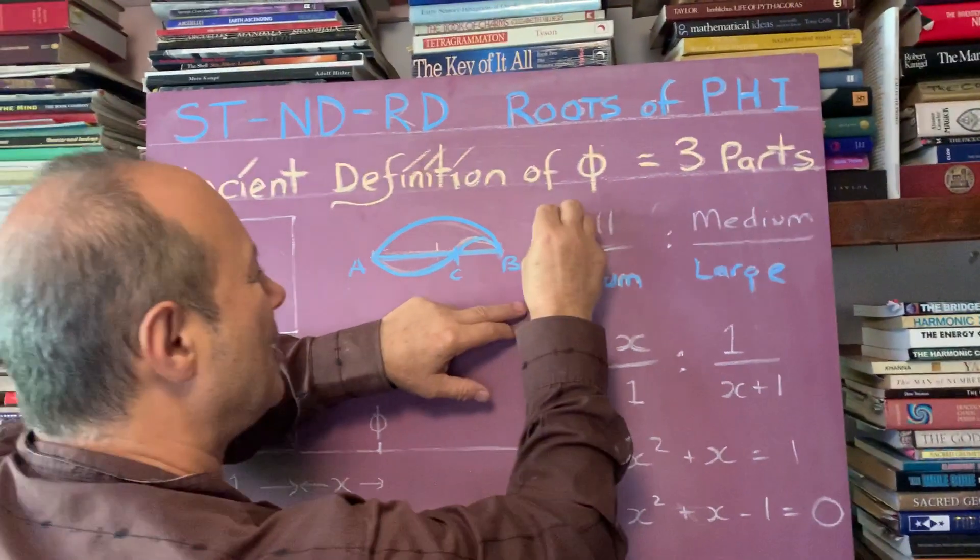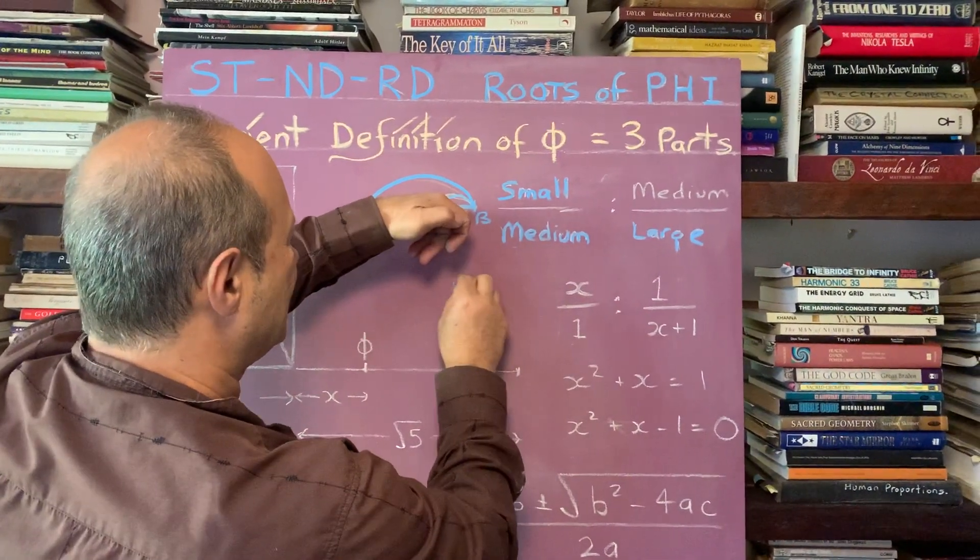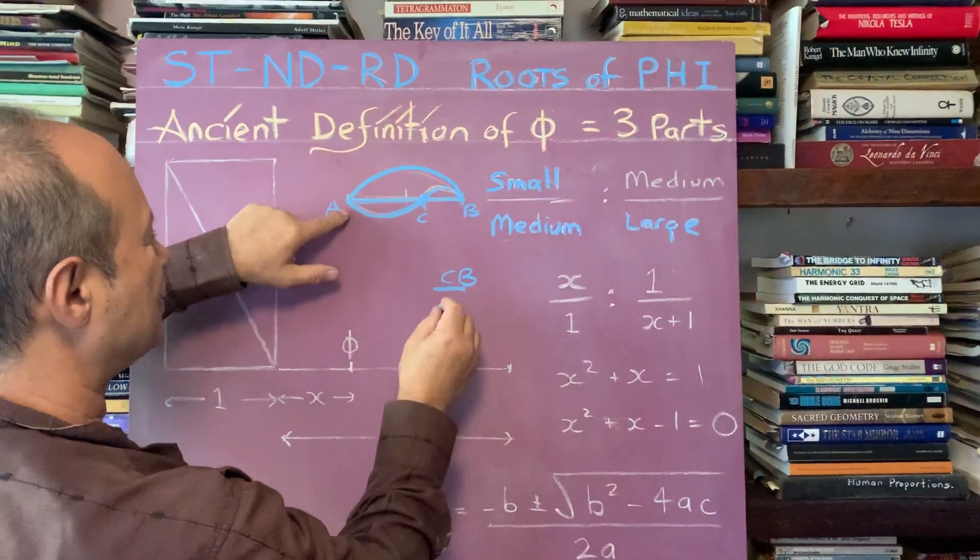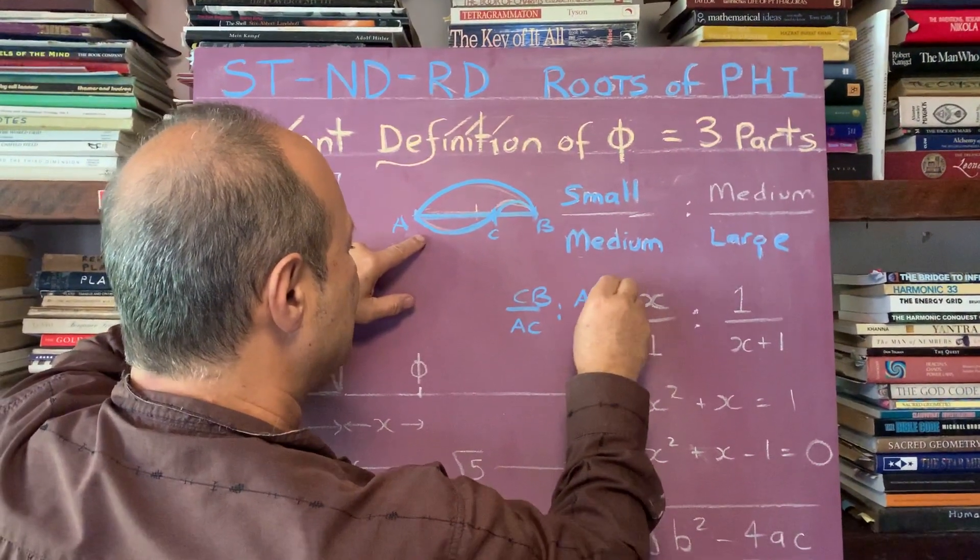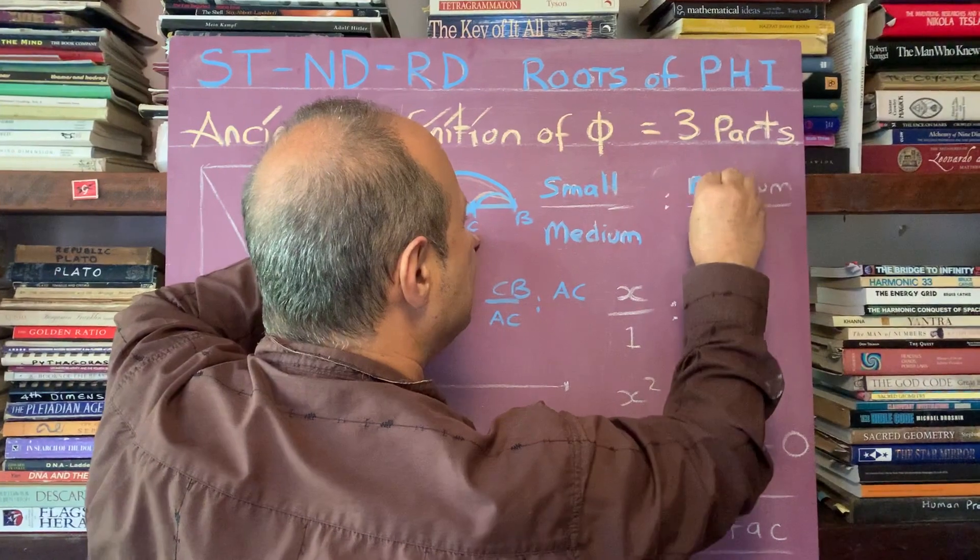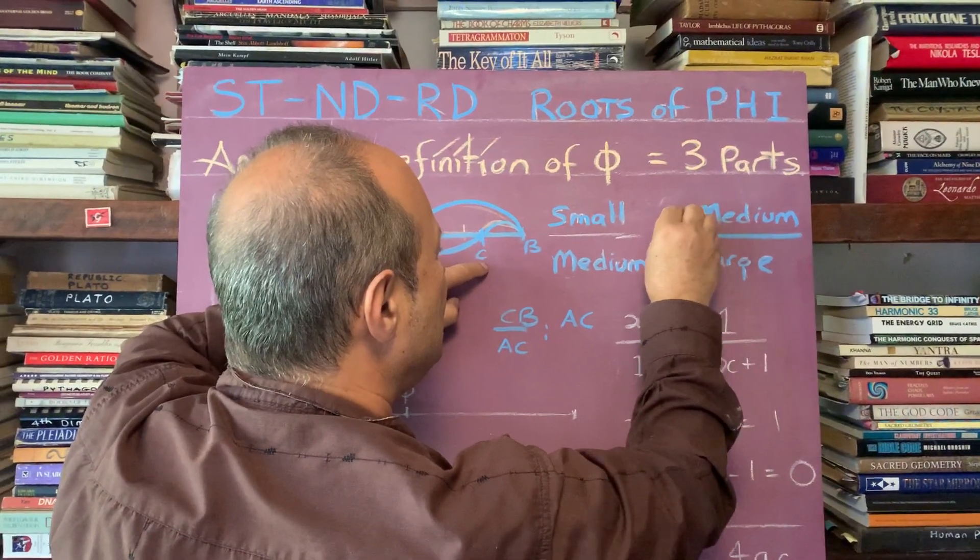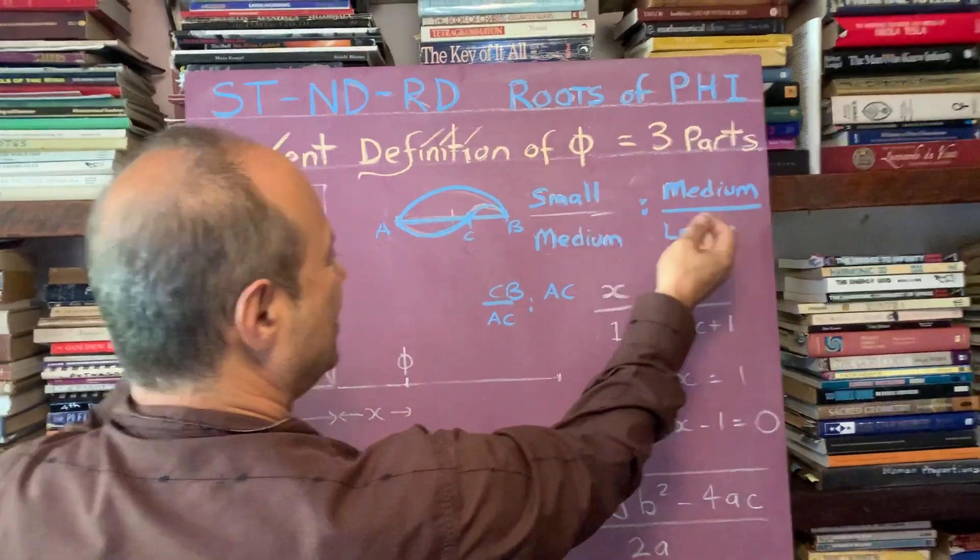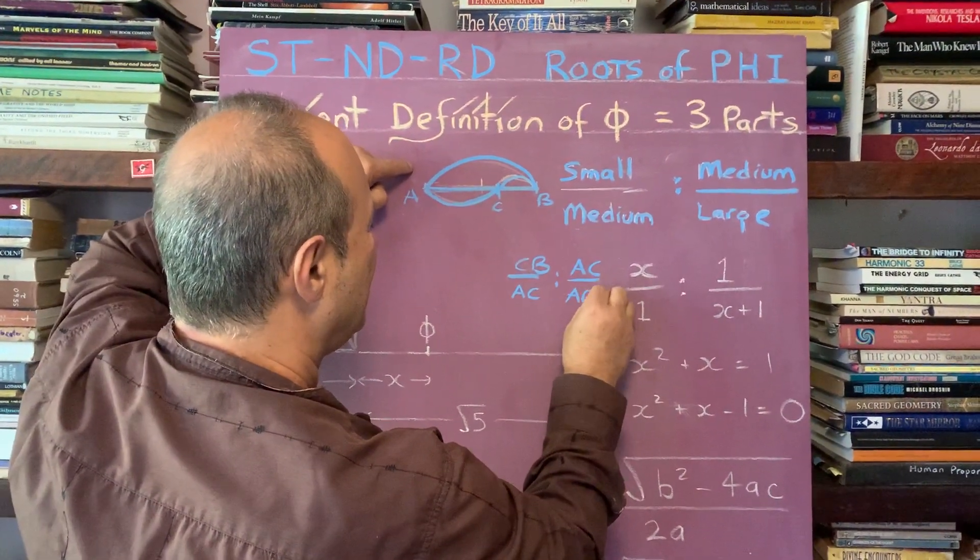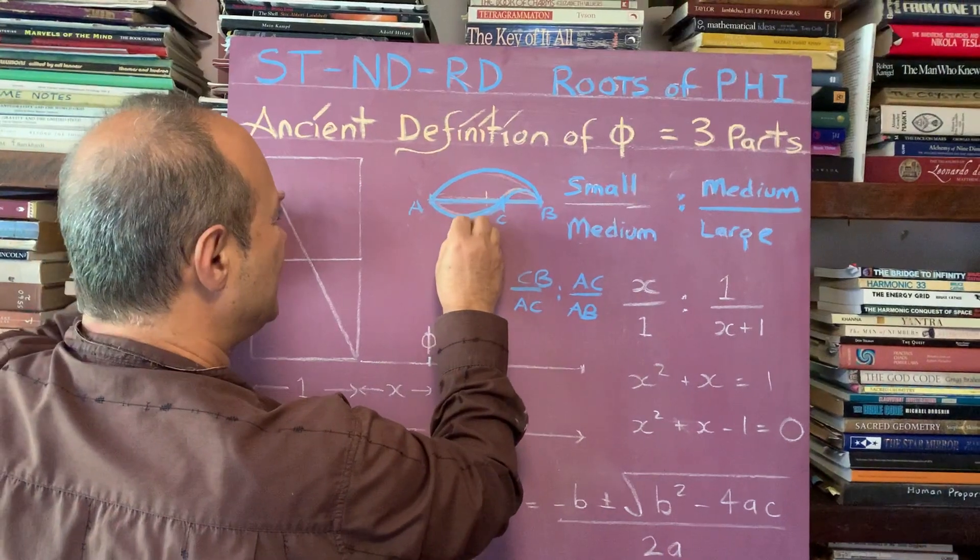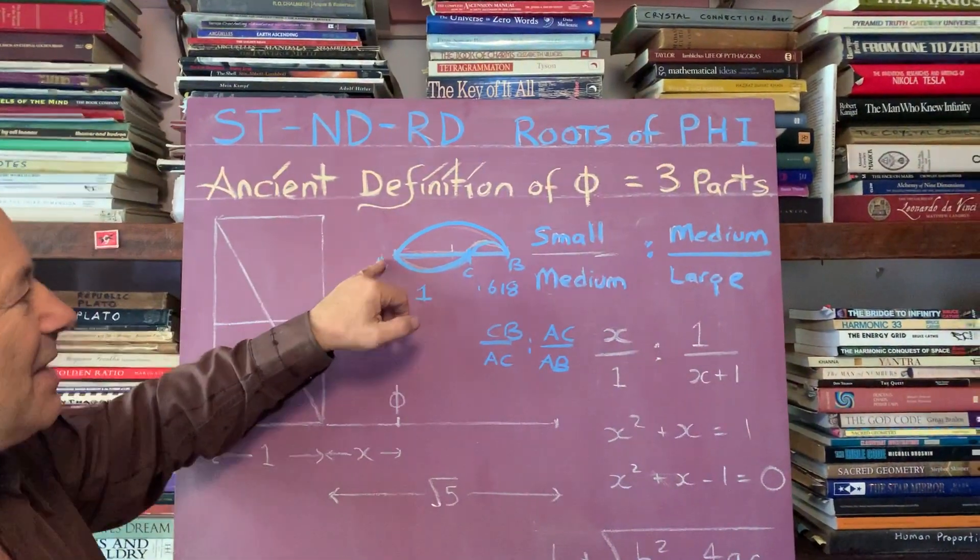I'm going to write that down - this is a two and a half thousand year old problem. What's the ratio of the small, which is CB, divided by the medium the large section AC, is in the same ratio as AC is to the whole, which is AB. If AC is one, if this distance is one, it works out that CB is 0.618. So that means the length of AB is the golden ratio 1.618.